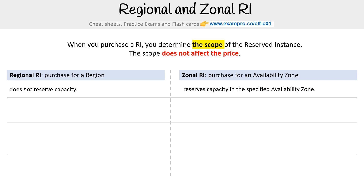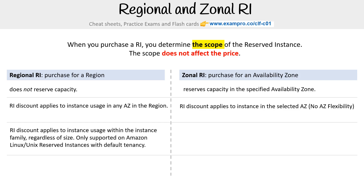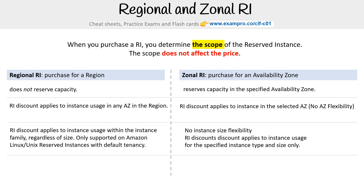In terms of AZ flexibility, you can use the regional RI for any AZ within that region. But for the zonal RI, you can only use it for that particular AZ. Talking about instance flexibility, with regional you can apply the discount to any instance in the family regardless of size, but with zonal there is no instance flexibility — you use it for exactly what you defined.